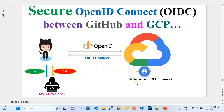Here we're going to create an identity federation configuration on GCP IAM, then leverage that identity provider to trust a service account present on the GCP account. The combination of the identity pool, identity provider, and service account allows the GitHub Action to leverage an OpenID Connect-based token and establish a connection with GCP to perform the required steps.